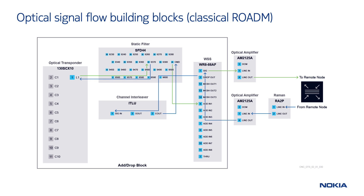In the upstream direction, shown by the green arrows, one or more black and white client signals are multiplexed into one single colored wavelength. Then, this colored signal enters the filter. Here, all wavelengths originated by several transponders located within the same node can be combined into a single aggregated WDM signal, made of multiple wavelengths, and it's sent to the WSS.